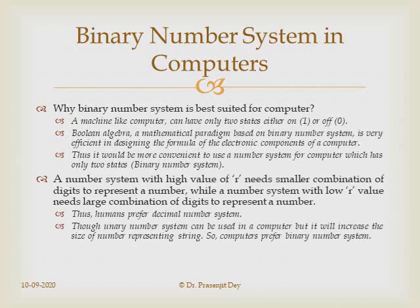A number system with a high value of R needs a smaller combination of digits to represent a number. That is why, though it is possible to use a unary number system in a computer, we don't use it. If we wanted to represent any number with a unary number system, the string representing the number would be too large to accommodate in a computer.